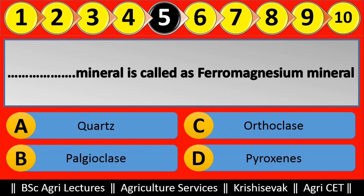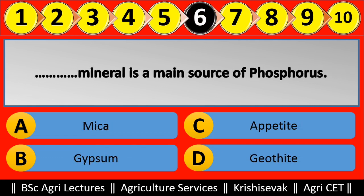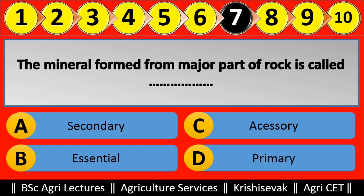Question 6: Blank mineral is the main source of phosphorus. Options are: (a) Mica, (b) Gypsum, (c) Apatite, (d) Goethite. Right answer is Apatite, option C. Question 7: The mineral formed from the major part of rock is called blank. Options are: (a) Secondary, (b) Essential, (c) Accessory, (d) Primary. Right answer is Essential.